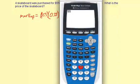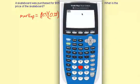55 times 0.25 equals 13.75. So $13.75 is the markup.